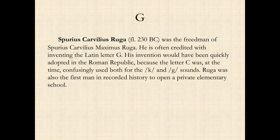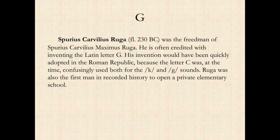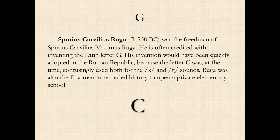We actually know exactly who invented the letter G. This man, Spurius Carvilius Ruga, who lived around 230 BC, was a freedman and is credited with inventing the Latin letter G. His invention was quickly adopted in the Roman Republic because the letter C was confusingly used for both the K sound and the G sound. Ruga was also the first man in recorded history to open a private elementary school — as a teacher, he was constantly running into problems with students over this one letter. So he said: here is a letter for K, and if we make a little distinguishing mark on it, that can be G.